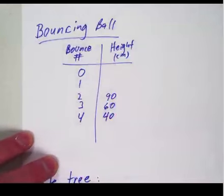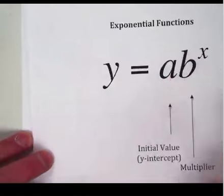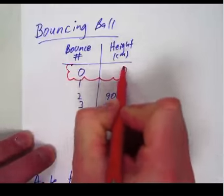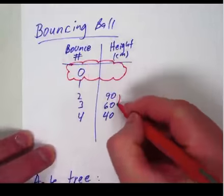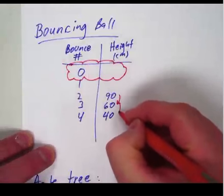If we go back to what we just talked about in this formula, we need the initial value, what it starts at, and what it goes by. So if we take a look at this, we don't have the initial value, which would be here at the zero. So we need to work our way backwards to find it. We also need to figure out what this is going by. How does 90 change to 60 and then 60 to 40?